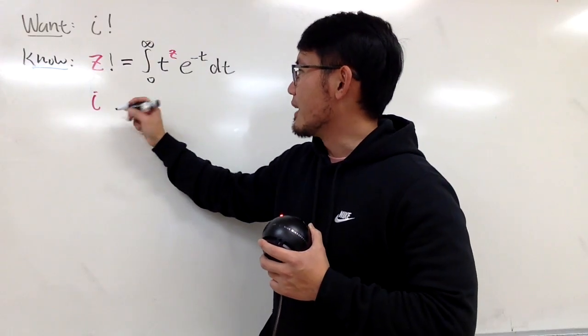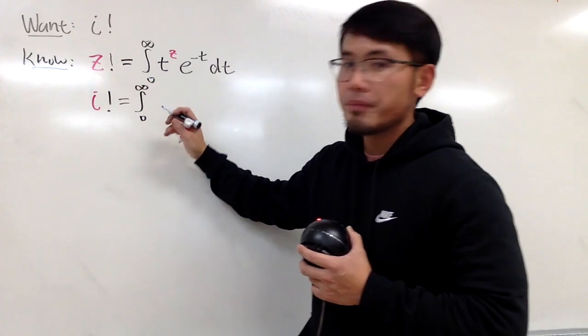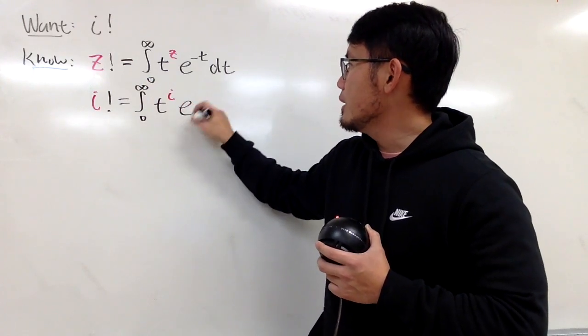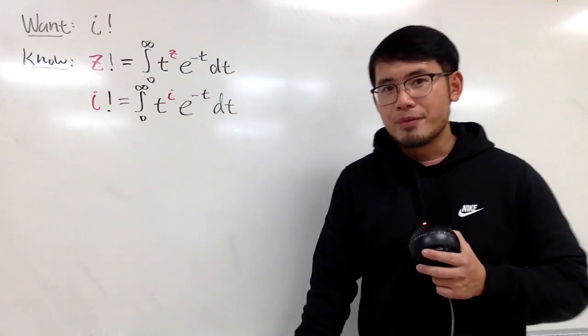So, we get i factorial being the integral from 0 to infinity. And here, we will have t to the i's power, e to the negative t dt. So, this is very nice.